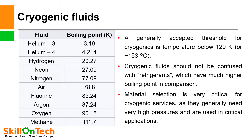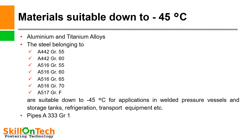A list of cryogenic fluids shows that nitrogen boils at 77.09 Kelvin, which is equal to –196°C — that is a very, very low temperature. In industries we have to work under low temperature ranges for various services. Therefore, it is very important to know what materials are suitable down to low temperatures, such as down to –45°C.